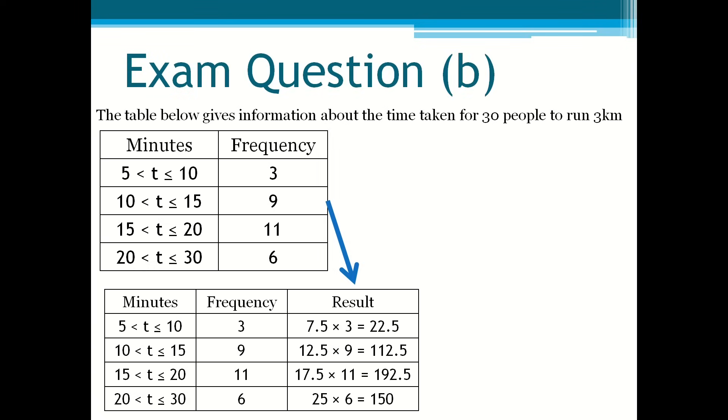7.5, 12.5, 17.5 and 25. They are all the midpoints of the class intervals. Then you add the results together and you get 477.5.